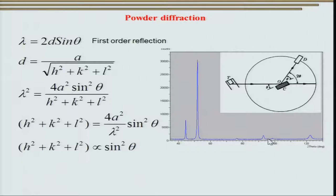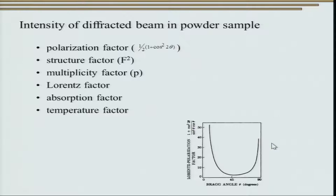For a powder sample, the intensity of the diffracted beam is affected by the polarization factor, which we covered in the last class. We also looked at the structure factor, which essentially determines the intensity of the diffracted peak. Another important parameter we have not yet touched upon is the multiplicity factor.